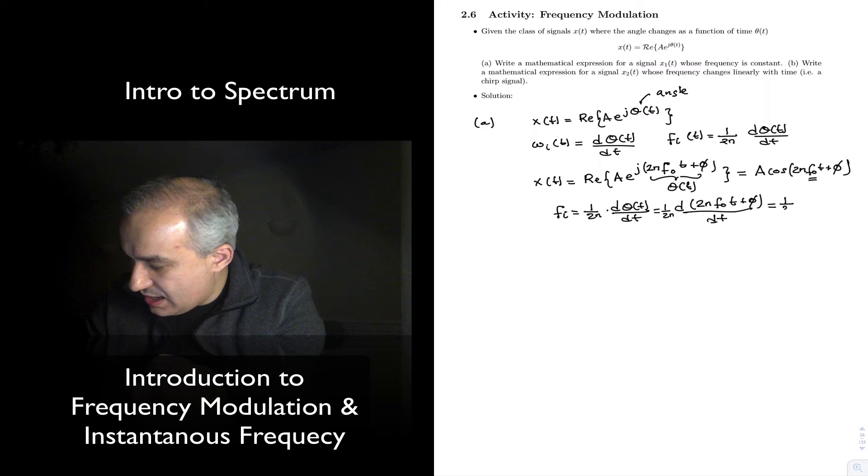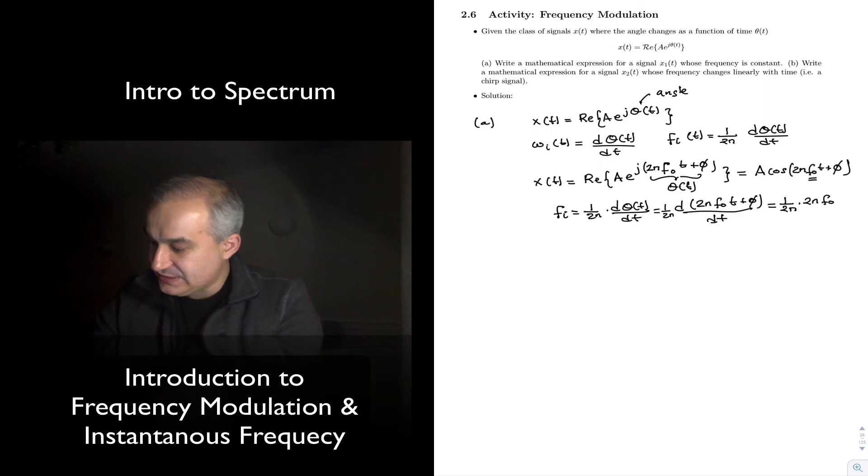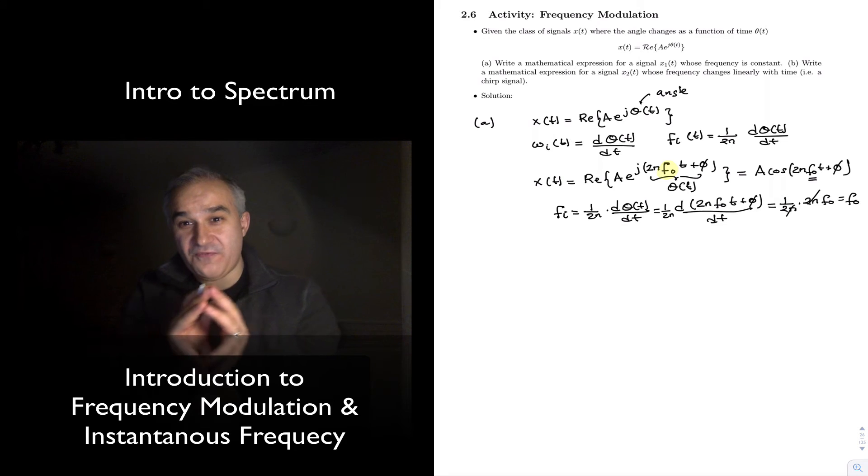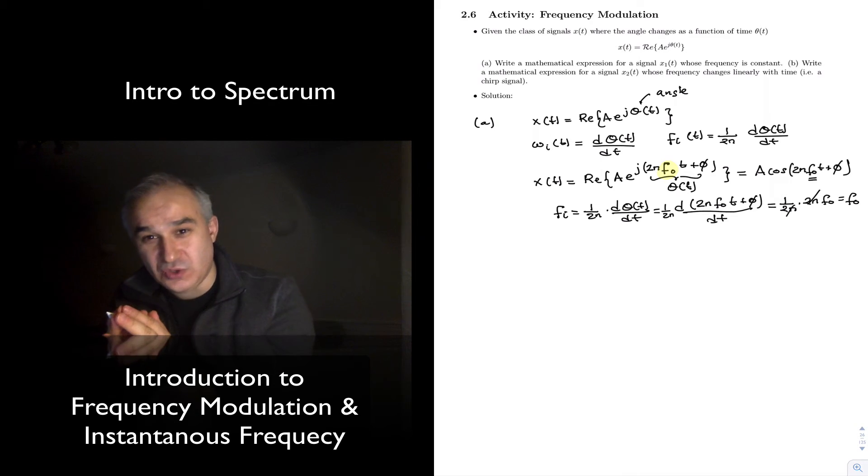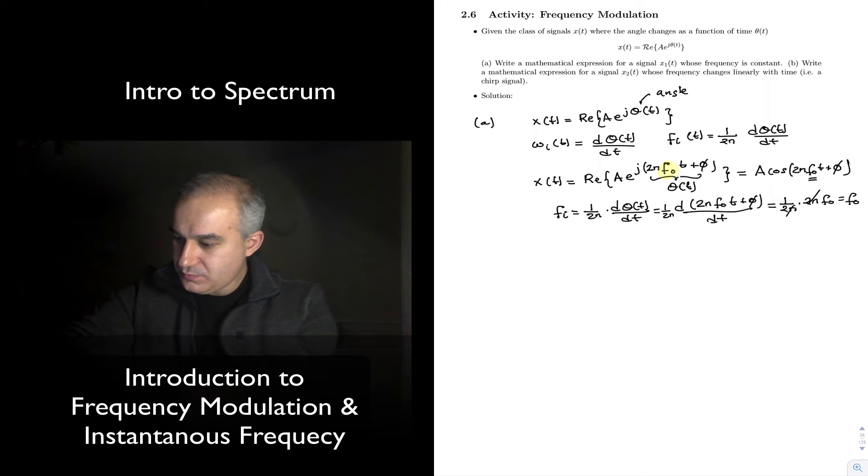And this is 1 over 2π times the derivative of 2π f0. This cancels, and so it gives me that yes, indeed, the frequency is what we have been calling the frequency. That's a consequence of the instantaneous frequency being the derivative of the angle.